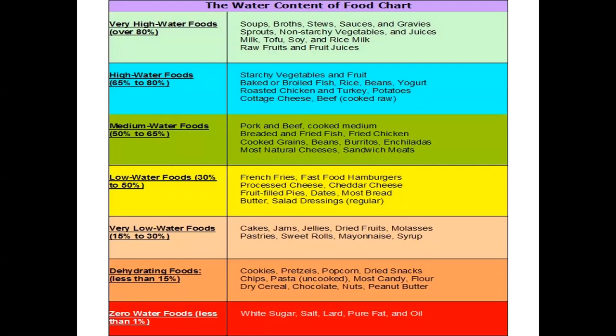Very high water foods include soups, curries, dals, broths, stews, sauces, gravies, sprouts, non-starchy vegetables like spinach and green onion, juices, milk, paneer, tofu, rice milk, almond milk, peanut milk, all types of milk, and raw fruits and juices.